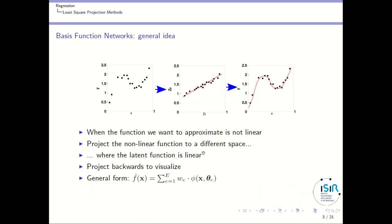The general idea is the following. Imagine you have a set of points where there is no simple linear function that can approximate the relationship between inputs and outputs. What we do is project those points into a different space where the relationship between input and output is linear, and then project backward into the input space to see that this corresponds to a particular nonlinear function.